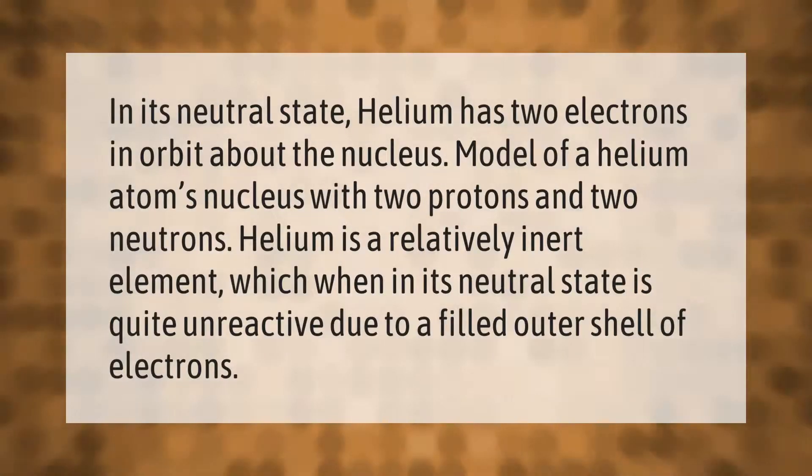In its neutral state, helium has two electrons in orbit about the nucleus. Model of a helium atom's nucleus with two protons and two neutrons. Helium is a relatively inert element which, when in its neutral state, is quite unreactive due to a filled outer shell of electrons.